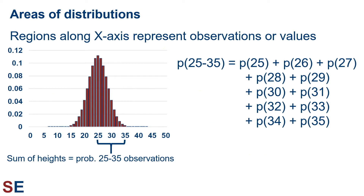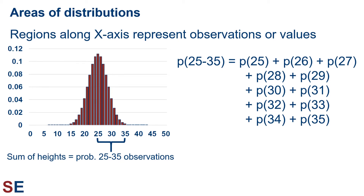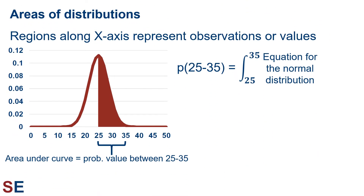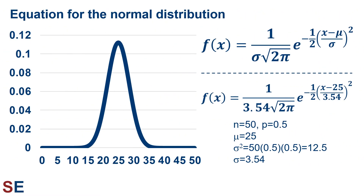Looking at our histogram situation in more detail, we would calculate the overall probability as the sum of all those individual probabilities for the number of observations we're interested in. Looking at our probability curve situation in more detail, we would calculate the overall probability as the integral along the range of values on the x-axis we're interested in. To perform these integrals or calculate these areas, we would need the equation for that curve that represents those probabilities.